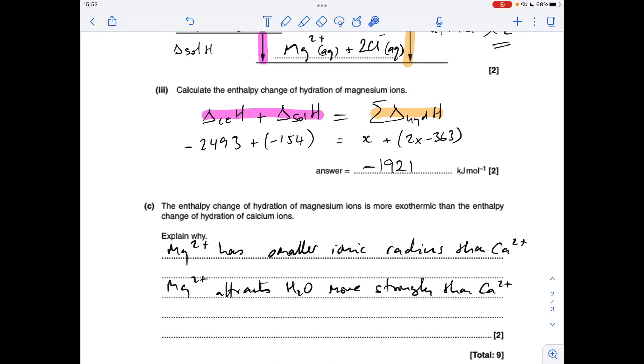And finally, why is the enthalpy change of hydration of magnesium ions more exothermic than that for calcium ions? It's all down to the ionic radius. The charges are the same so we can't talk about charge effect. Magnesium 2+ ions are smaller, they have a smaller ionic radius than calcium 2+ ions, and so because of that, Mg²⁺ attracts H₂O more strongly than Ca²⁺.